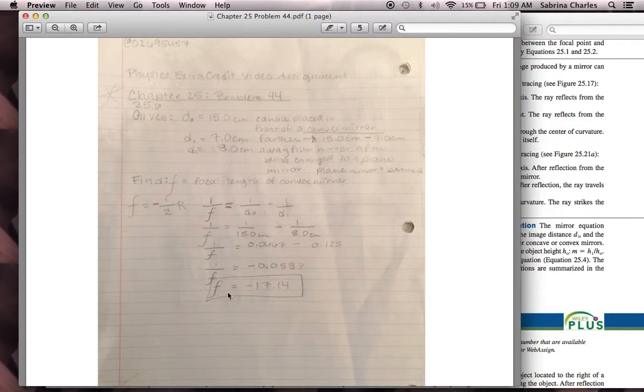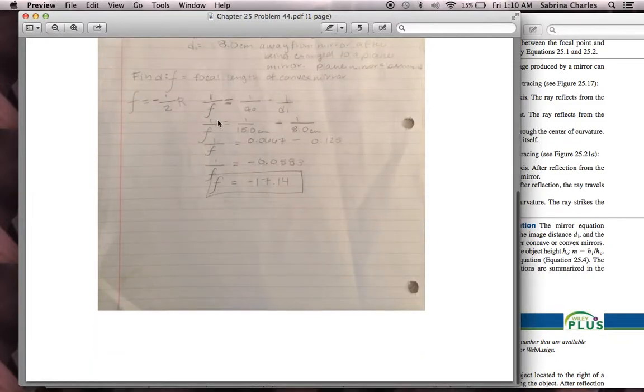In order to find the final focal length, you need to do the inverse. So, 1 over negative 0.0583, which gives us the final answer of negative 17.4. And I believe that's centimeters, but I forgot to note that down here. Thank you for listening.